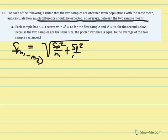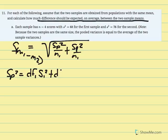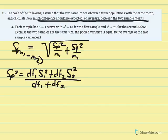The alternate pooled variance equation uses degrees of freedom for the first distribution multiplied by variance of the first distribution, added to degrees of freedom for the second distribution multiplied by variance of the second distribution, all over degrees of freedom 1 plus degrees of freedom 2. Since they gave us variance, we use this equation instead of SS1 plus SS2 over degrees of freedom 1 plus degrees of freedom 2.